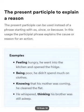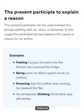The present participle can be used to explain a reason — instead of a phrase starting with 'since' or 'because,' the participle phrase explains the cause or reason for an action. Examples: 'Feeling hungry, he went to the kitchen and opened the fridge.' 'Being poor, he did not spend much on clothes.' 'Knowing that his mother was coming, he cleaned the flat.' These participles give the reason.